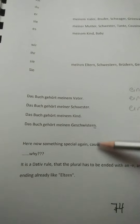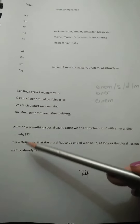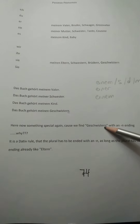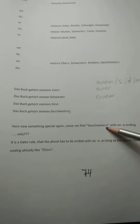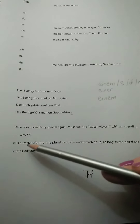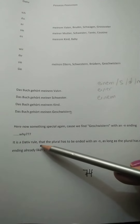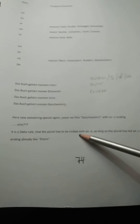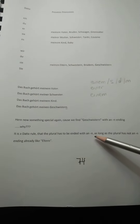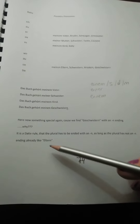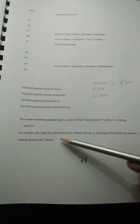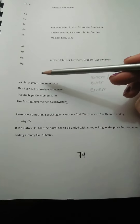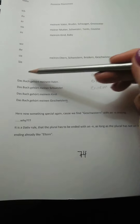So here we have something certain, because Geschwister is already plural, but we have Geschwistern — you have here an ending N. Why? This is a dative rule: in the plural of dative you have to take the ending N. And Eltern already has N inside.